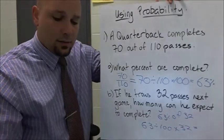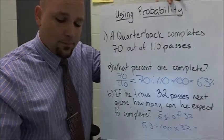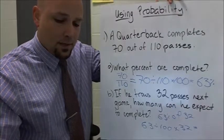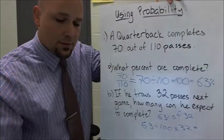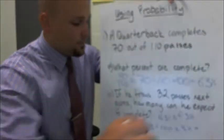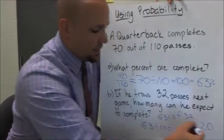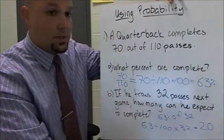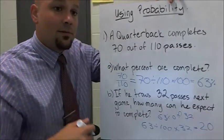So on our calculator, we do 63 divided by 100 times 32 and we get 20 passes. So that means that next game, if he keeps that percentage up, he can expect to complete 20 passes.